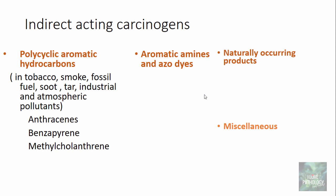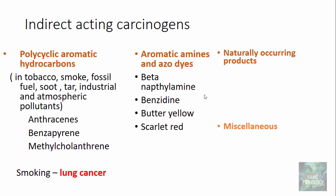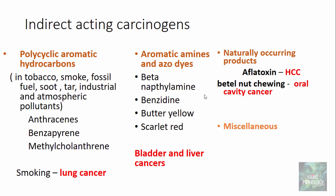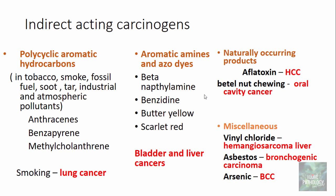Polycyclic aromatic hydrocarbons are implicated in lung cancer by smoking. Aromatic amines and azo dyes such as beta-naphthylamine, benzidine, butter yellow, and scarlet red are used in dye industries and are implicated in bladder and liver cancers. Naturally occurring products like aflatoxin — a fungus which grows in grains — are implicated in hepatocellular carcinoma. Beta-naphthylamine is implicated in oral cavity cancers. Miscellaneous agents include vinyl chloride (hemangiosarcomas of the liver), asbestos (bronchogenic carcinomas), and arsenic (basal cell carcinomas).